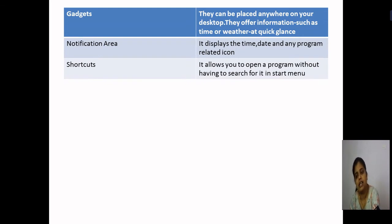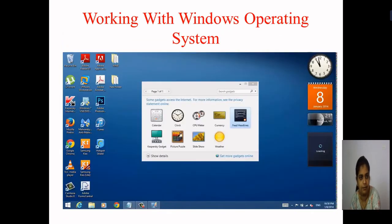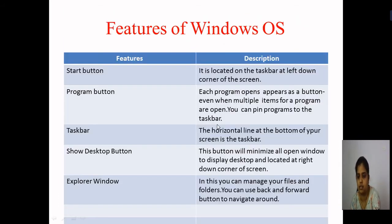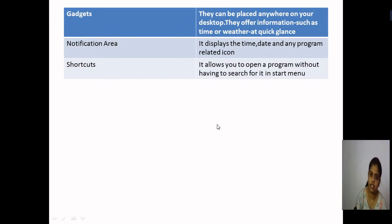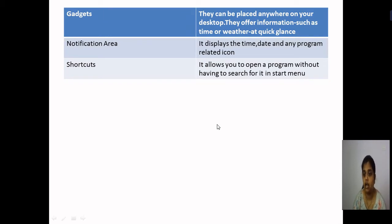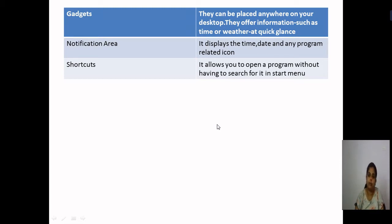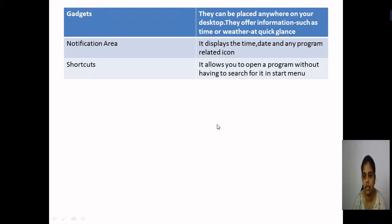The next feature is gadgets. Gadgets offer you different types of information such as time, weather, and calendar. They can be placed anywhere on the computer system — on your desktop or laptop, wherever you want to place them. The next feature is the notification area. The notification area is a place on your desktop where your time, date, and any program related to its icon is stored and shown.